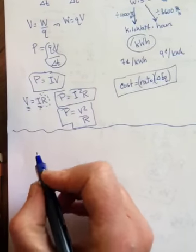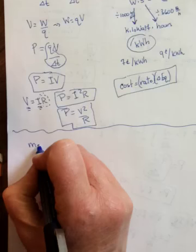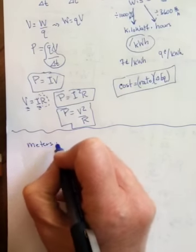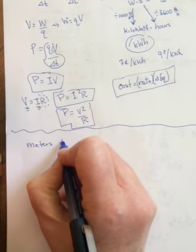Alright, a couple more little odds and ends. The first one is meters that we're putting in circuits.